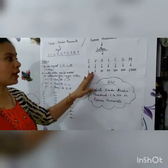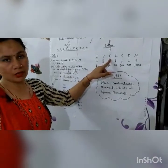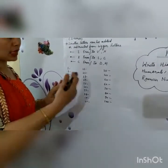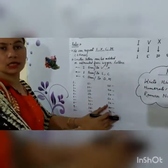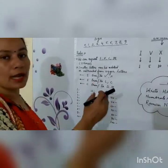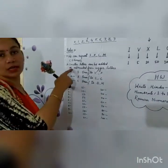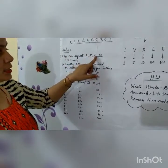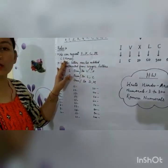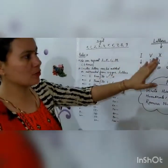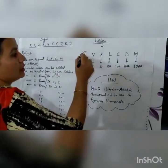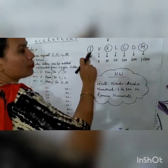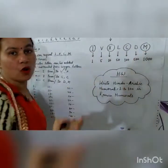Now, let's check how we will use these letters to write Roman numerals. Just come on this chart. These are the Hindu-Arabic numerals and we have to write them in Roman numerals. For writing Roman numerals, we have to follow certain rules. The first rule is: we can repeat I, X, C, and M only 3 times, not more than 3 times.